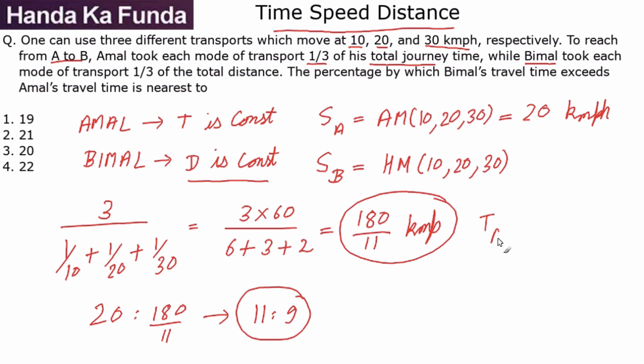If the ratio of the speeds SA by SB is 11 is to 9, that will mean the time taken by A and the time taken by B will be in the reverse ratio, or that will be 9 by 11.